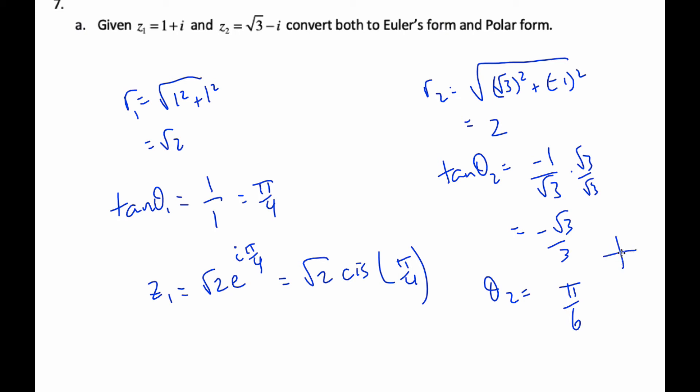Now, if I think about my quadrant, tangent's negative here, and so it's going to be negative pi by 6.